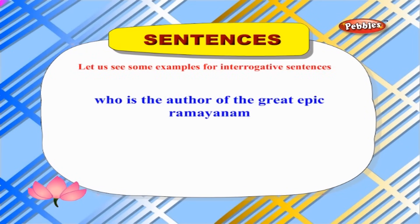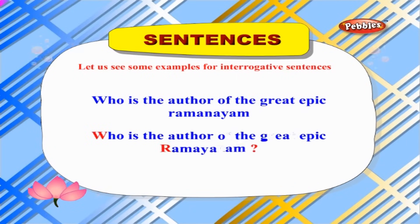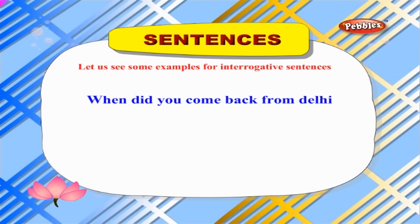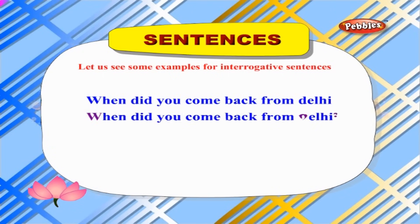Now let us see some examples for interrogative sentences. 'Who is the author of the great epic Ramayana?' — begin the sentence and the name of the book with a capital letter and end with a question mark. 'Where is your house?' — begin with a capital letter and end with a question mark. 'When did you come back from Delhi?' — begin the proper noun with a capital letter and end with a question mark.